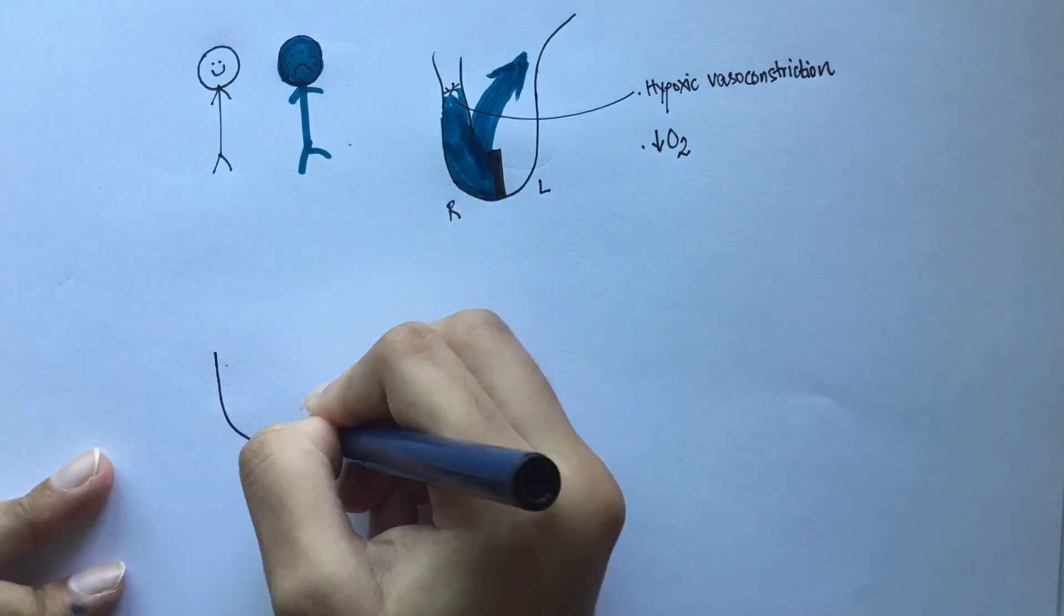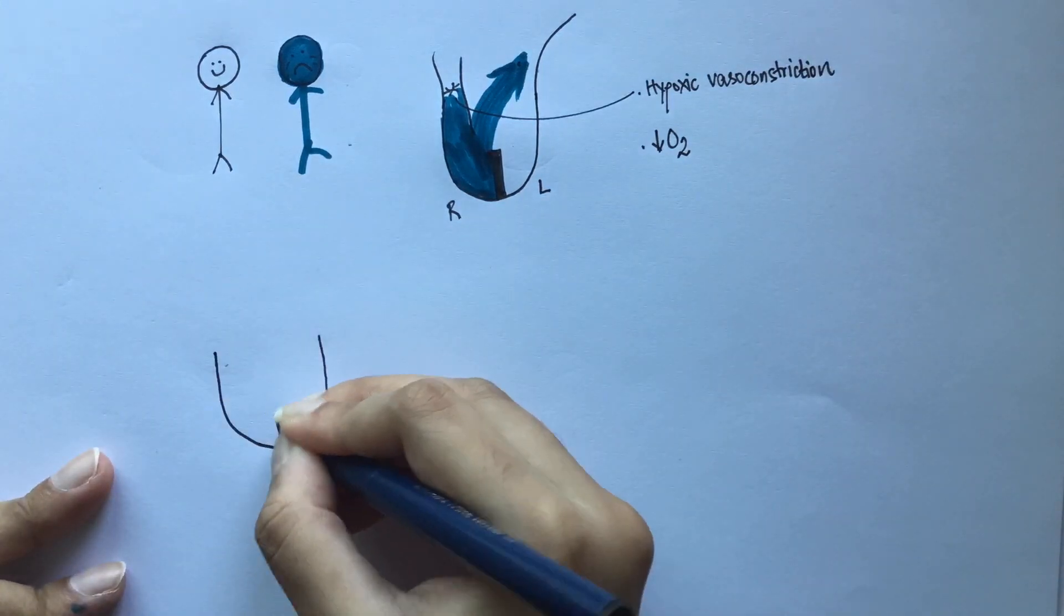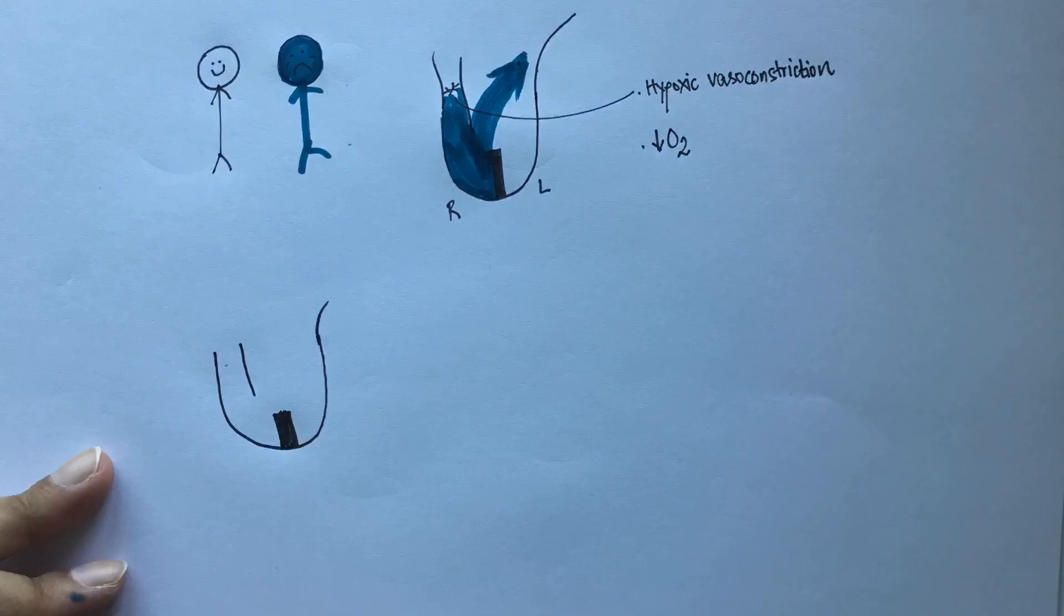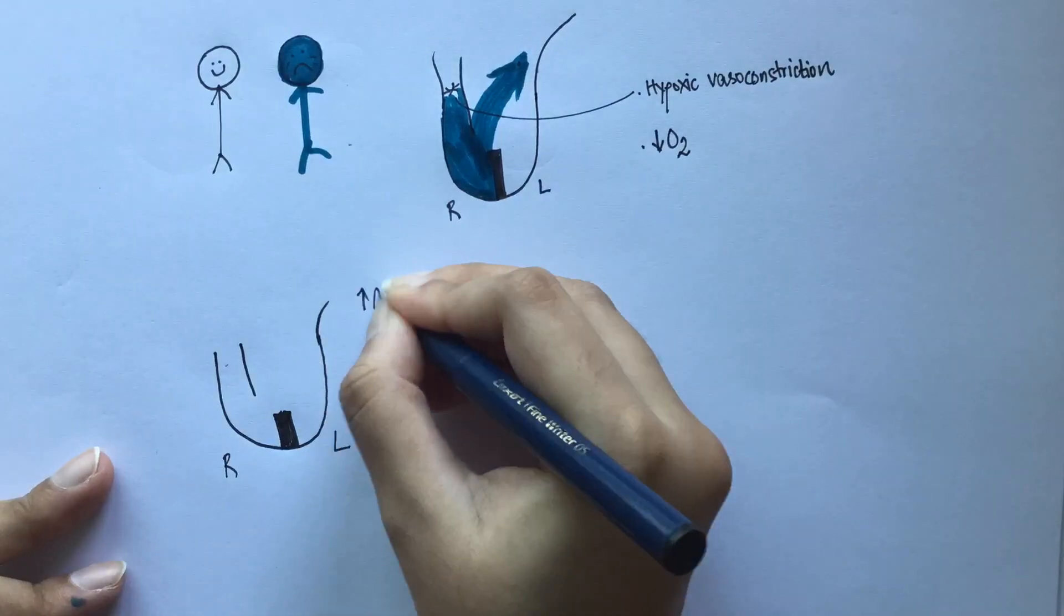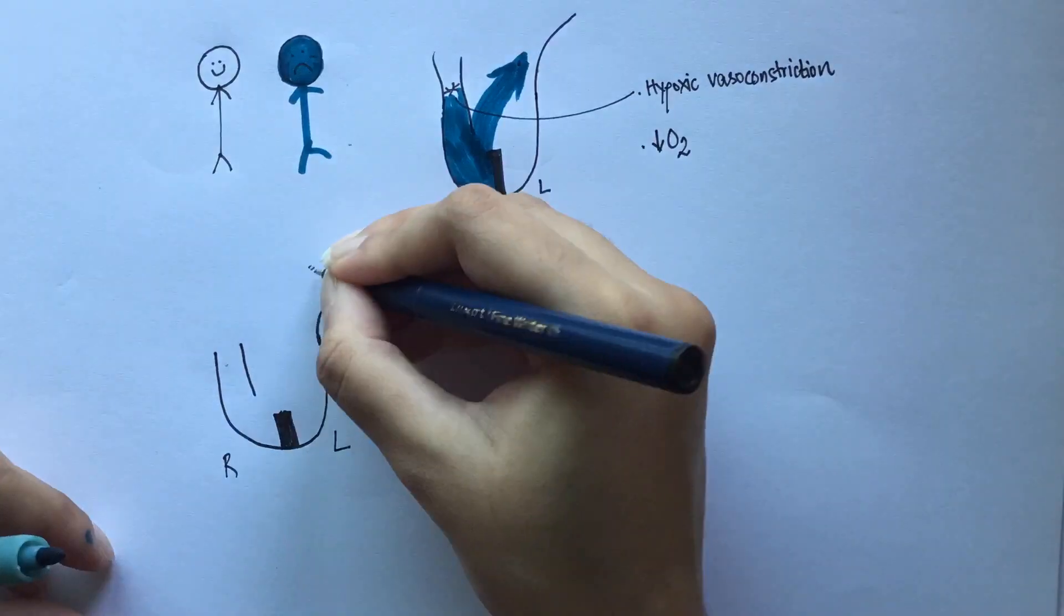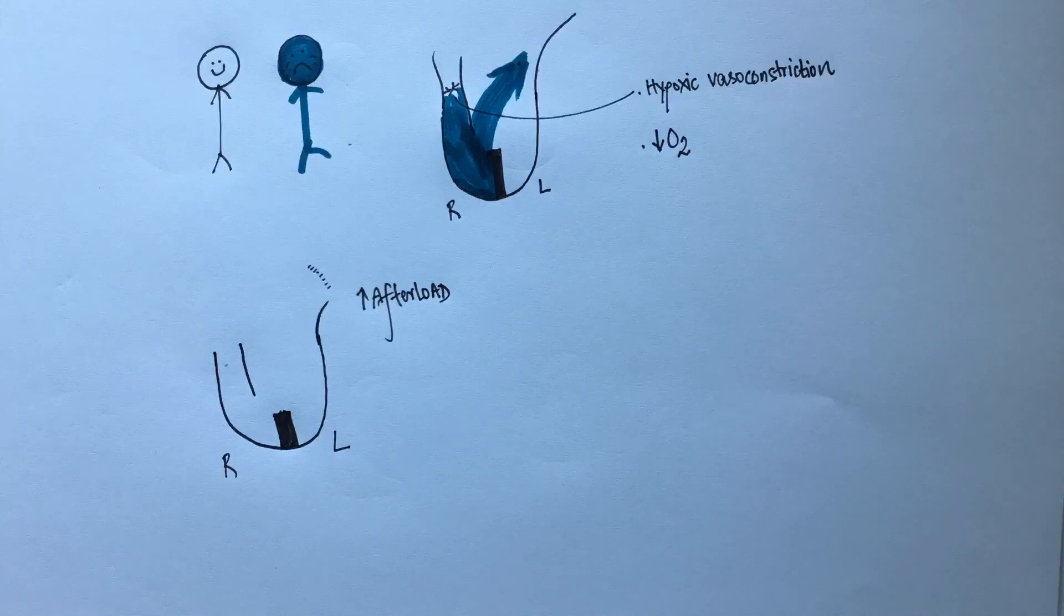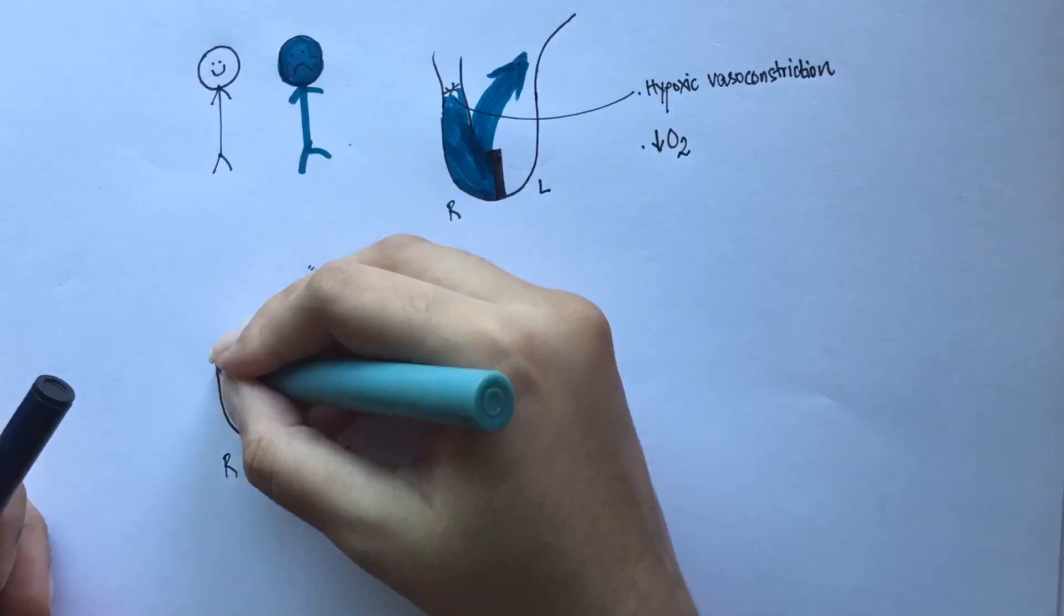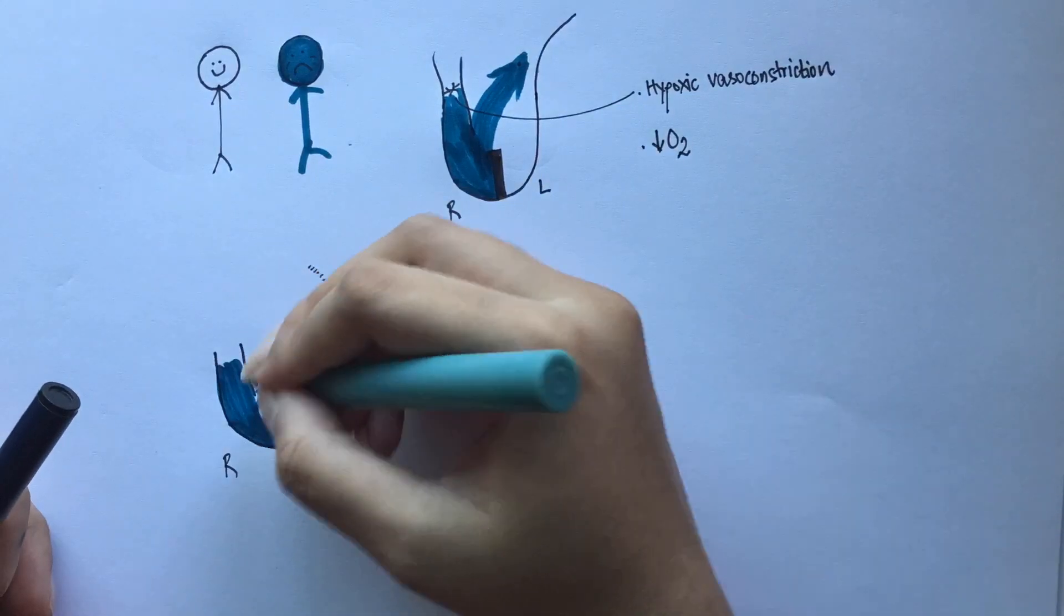Another interesting feature seen in these patients is that the cyanosis gets better when they squat or are in the knee chest position. The reason behind this is that these maneuvers increase the abdominal pressure which increases the afterload. Since there is high pressure here, there is a reduction in the amount of deoxygenated blood that flows through the ventricular septal defect. This hence improves the cyanosis.